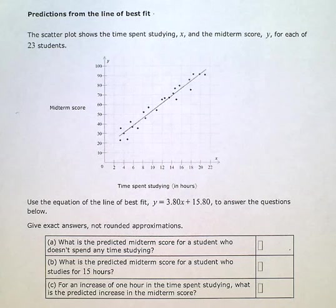Predictions from the line of best fit. The scatter plot shows the time spent studying, x, and the midterm score, y, for each of 23 students.